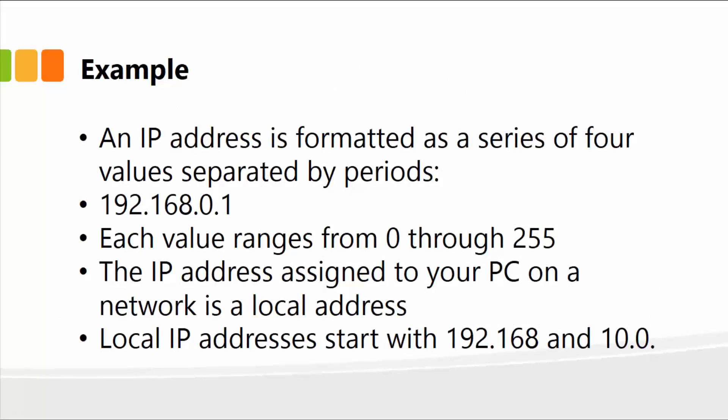Here's an example. An IP address is formatted as a series of four values separated by periods — for example, 192.168.0.1. Each value can range from 0 through 255.